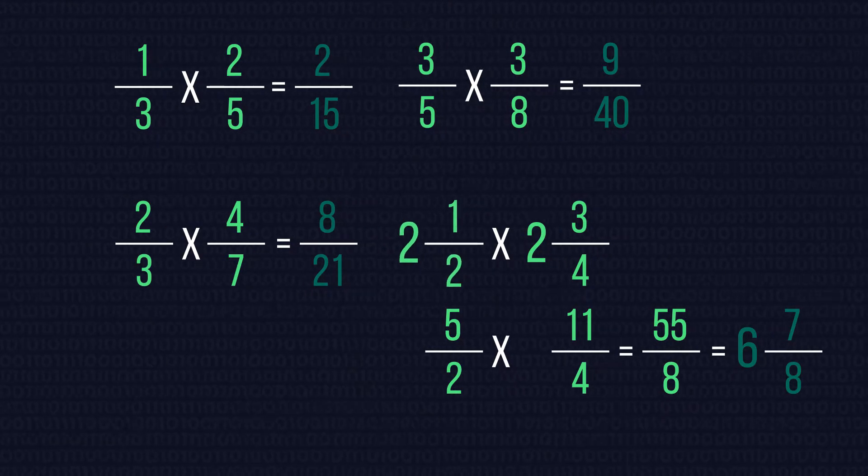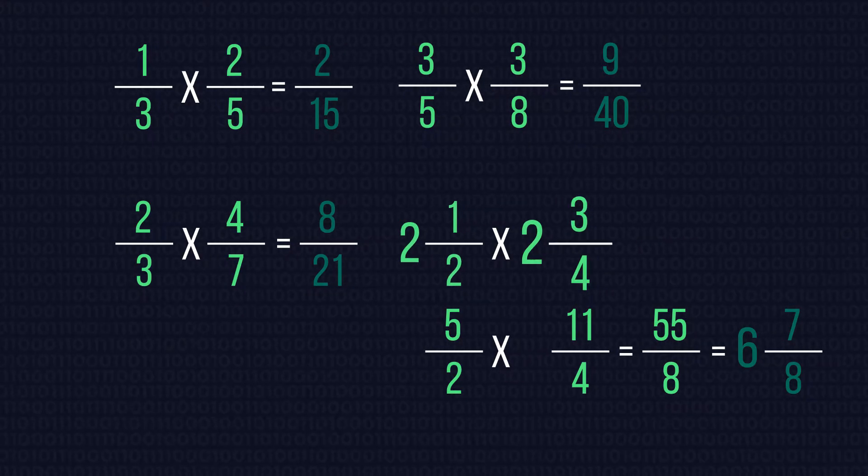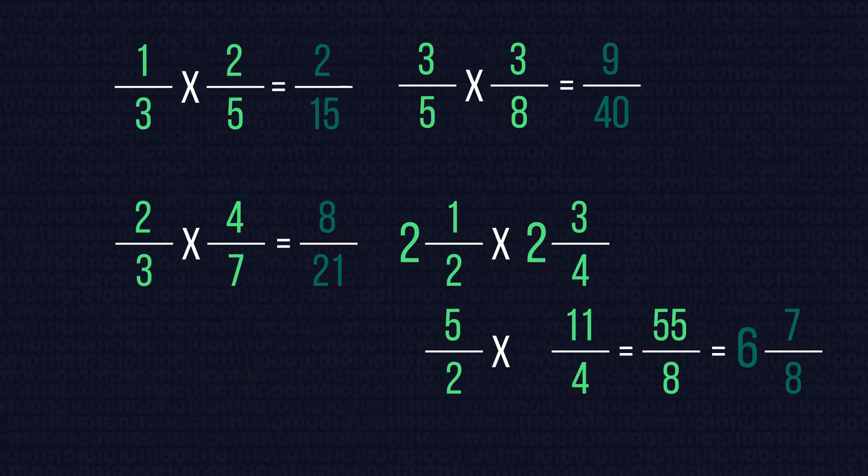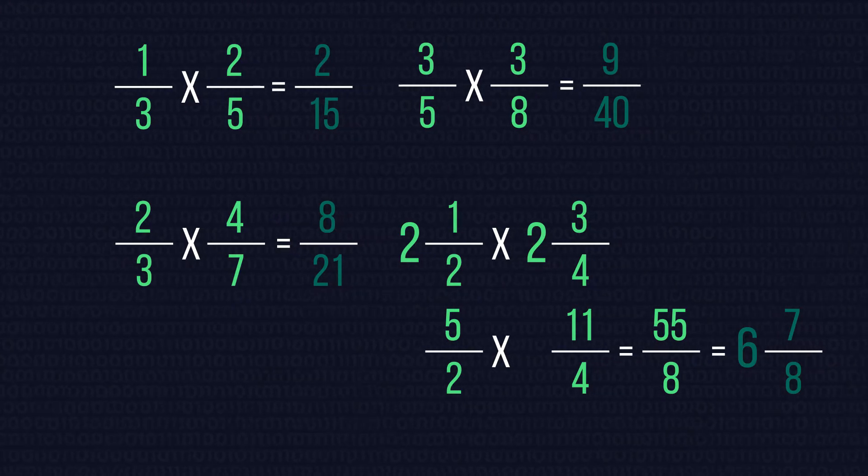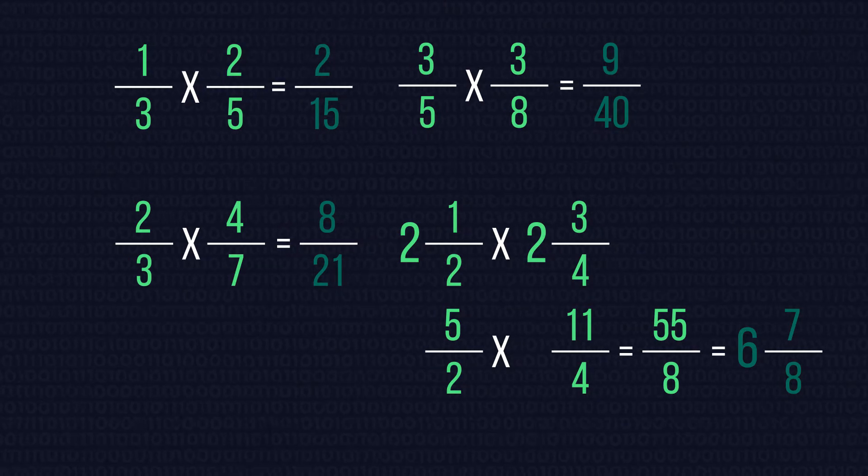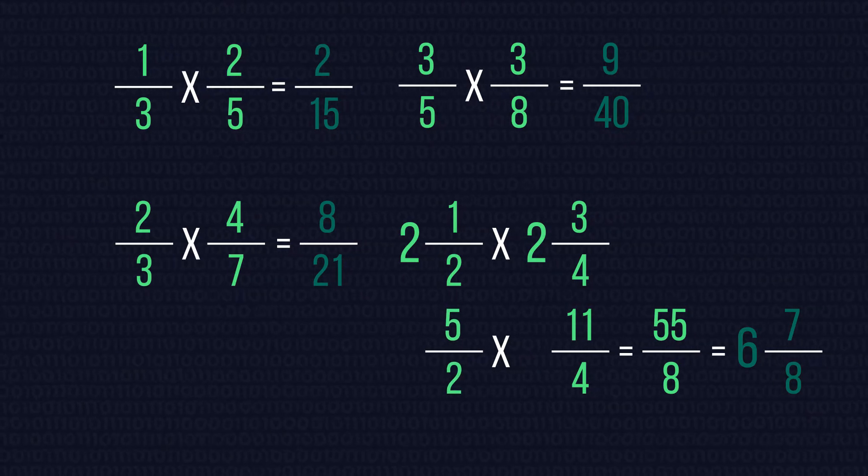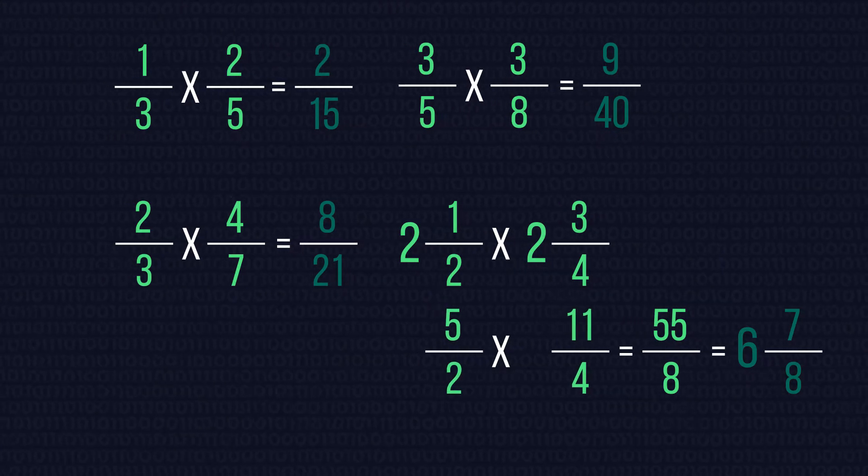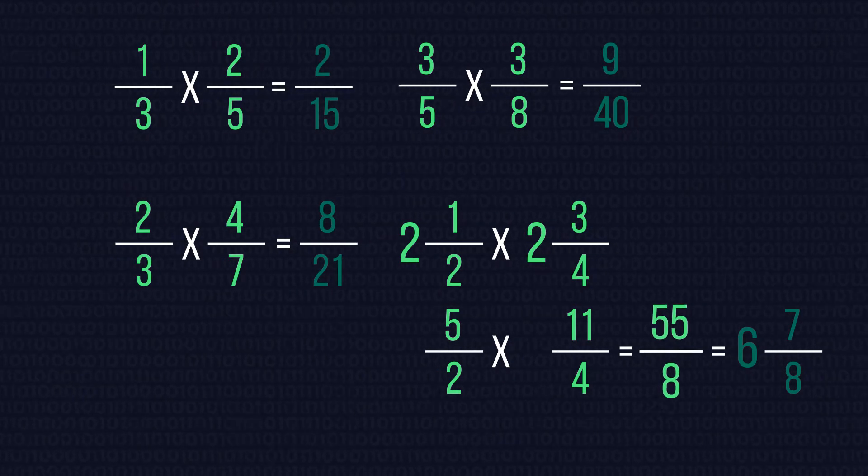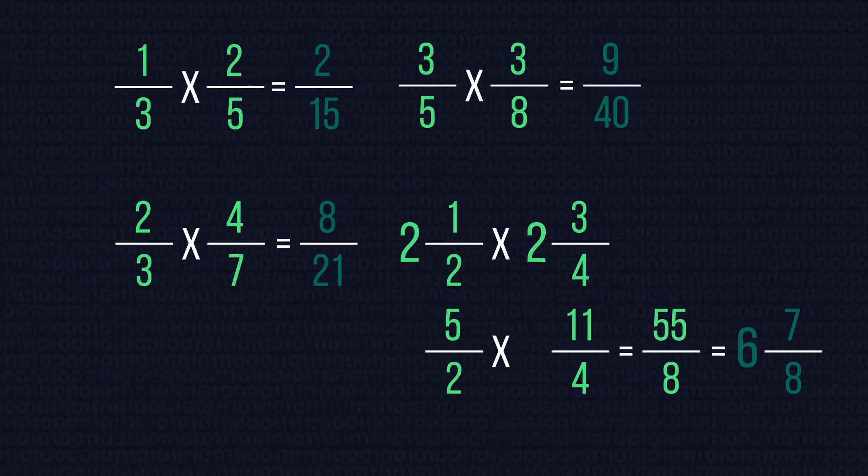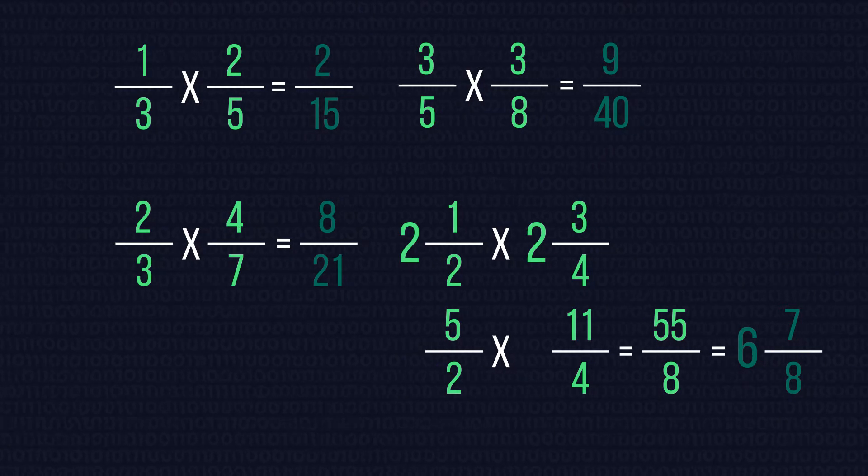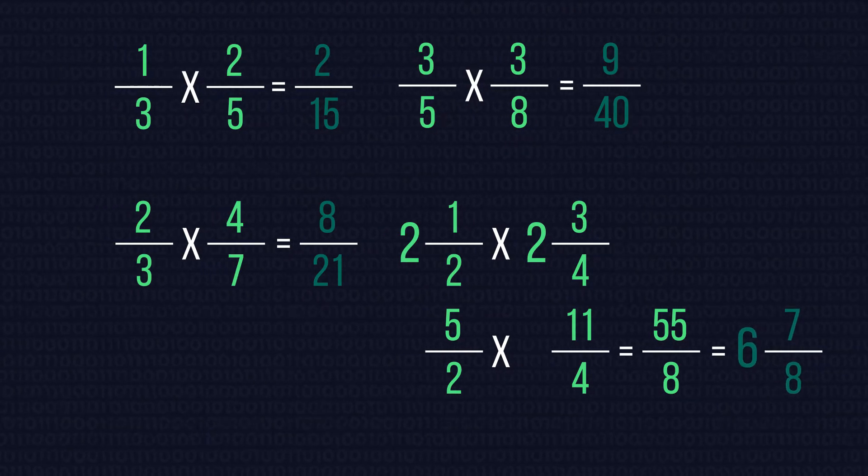To solve 2 and 1 half multiplied by 2 and 3 quarters, we first need to convert to an improper fraction. So the question becomes 5 over 2 multiplied by 11 over 4. This gives us 55 over 8, which needs to be converted back to a mixed number, 6 and 7 over 8.